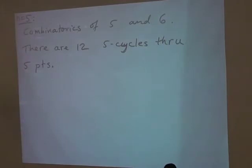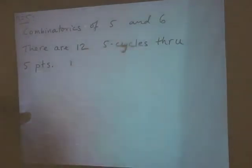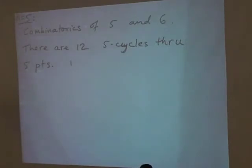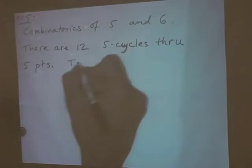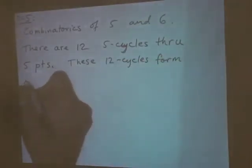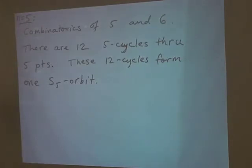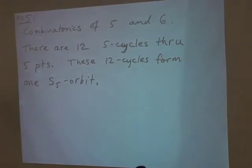The reason is that you can choose the ordering of points one through four in any way you want, and then the fifth one is determined — that makes four factorial different cycles. But if you reverse the orientation of a cycle, you count that as the same cycle, so you get 12 total. S5, the symmetric group on five things, acts naturally on these 12 five-cycles, and they form one S5 orbit.